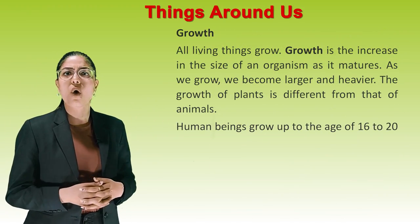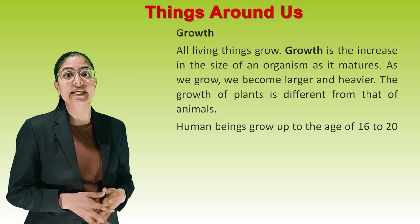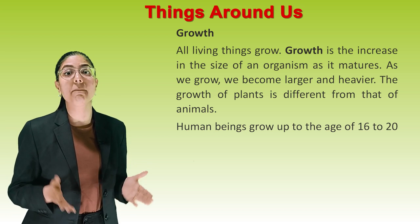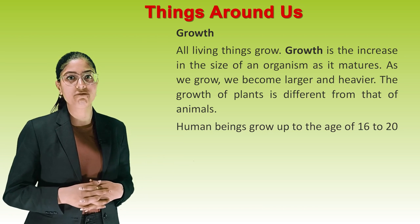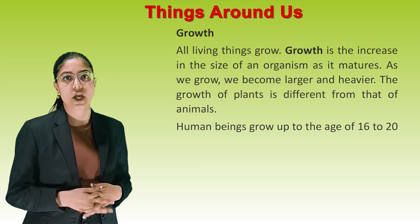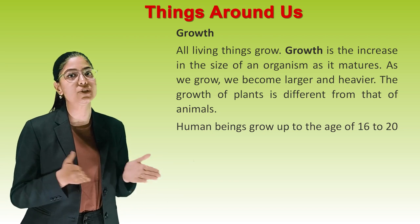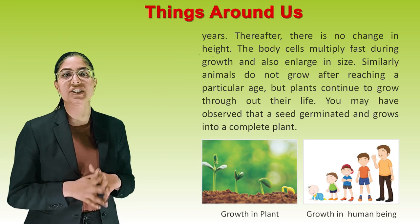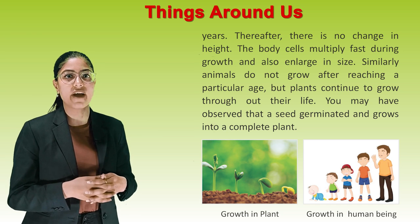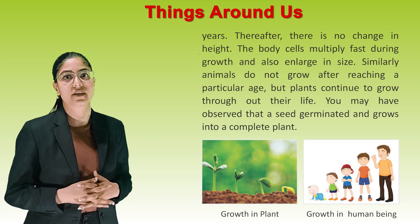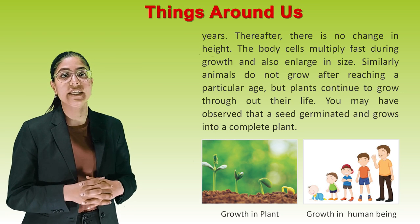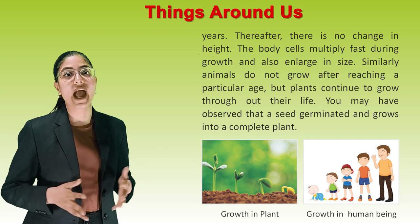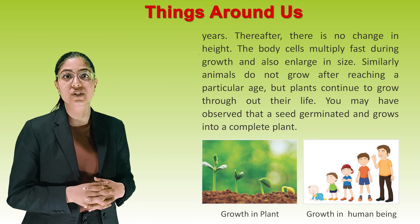Next is growth. All living things grow. Growth is the increase in size of an organism as it matures. As we grow, we become larger and heavier. The growth of plants is different from that of animals. Human beings grow up to the age of 16 to 20 years; thereafter, there is no change in height. The body cells multiply fast during growth and also enlarge in size. Animals do not grow after reaching a particular age, but plants continue to grow throughout their life. You may have observed that a seed germinates and grows into a complete plant.